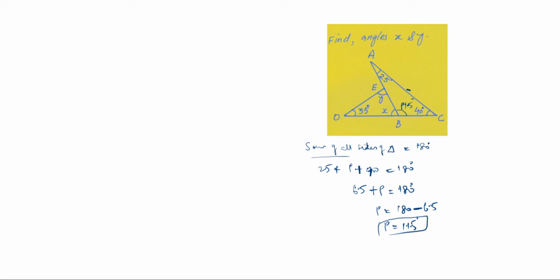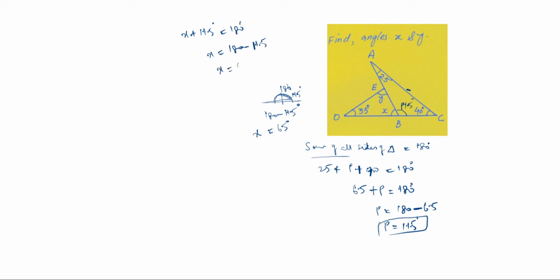As already studied in ninth grade, this is a 180° straight line. We got p = 115°. So: x + 115° = 180°, which means x = 180° − 115° = 65°. Therefore x = 65°.